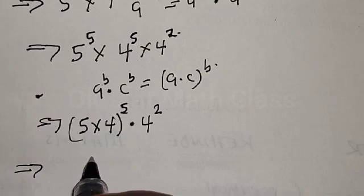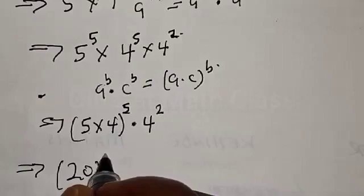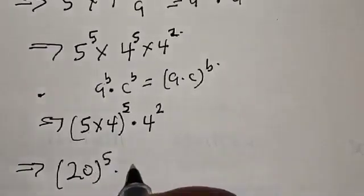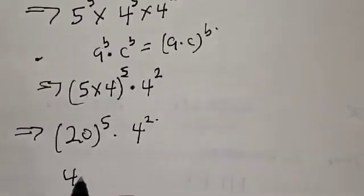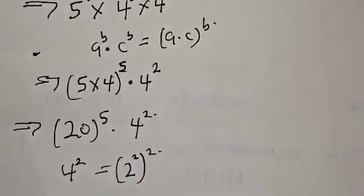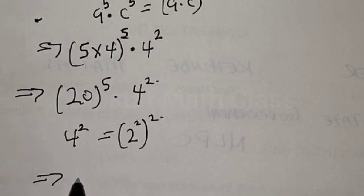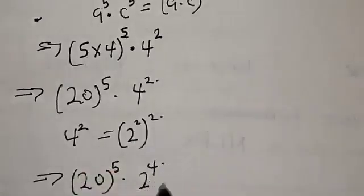This implies that 5 times 4 is 20, so we have 20 raised to power 5 multiplied by 4 squared. And 4 squared can be expressed as 2 raised to power 2, squared, which gives us 2 raised to power 4. So this implies that we have 20 raised to power 5 multiplied by 2 raised to power 4.